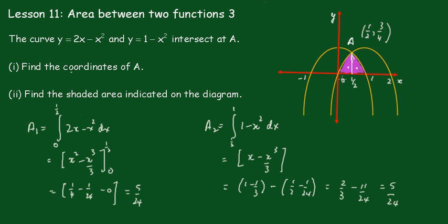So the total area is the two parts added together: 5 twenty-fourths plus 5 twenty-fourths equals 10 twenty-fourths, which simplifies down to 5 twelfths square units.